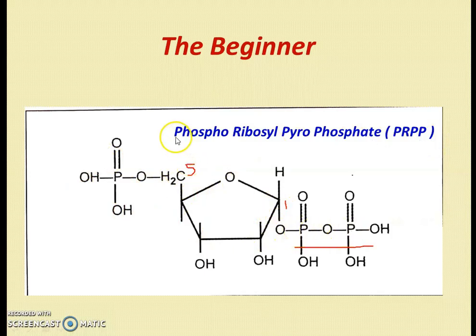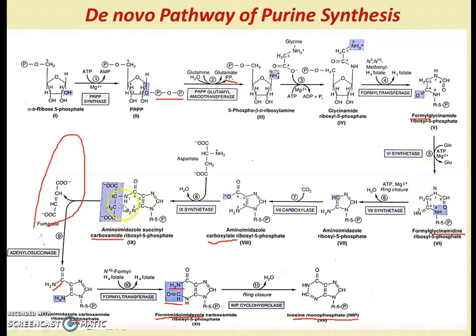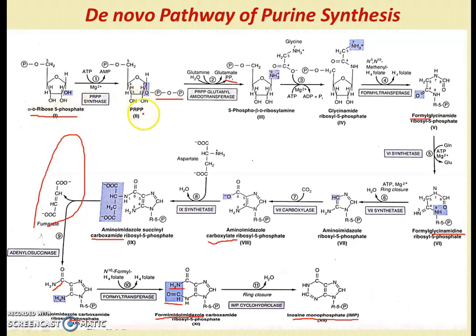PRPP is 5-phosphoribosyl-1-pyrophosphate, with a phosphate group at position 5 and pyrophosphate at position 1. Both pathways depend on this structure. The entire purine biosynthesis pathway results in the formation of inosine monophosphate (IMP), from which AMP and GMP are then constructed in one or two steps. The pathway comprises 10 steps. In the preliminary (zero) step, alpha-D-ribose-5-phosphate is converted to PRPP.